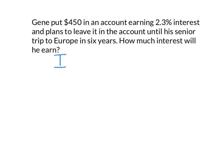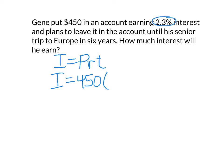I equals PRT. The interest is what we don't know. The principal we do know: $450, times the rate. Now remember that 2.3% is 2.3 over 100, so be careful that you don't put 0.23. Divide 2.3 by 100 and you get 0.023, times the time, which in this case is six years.